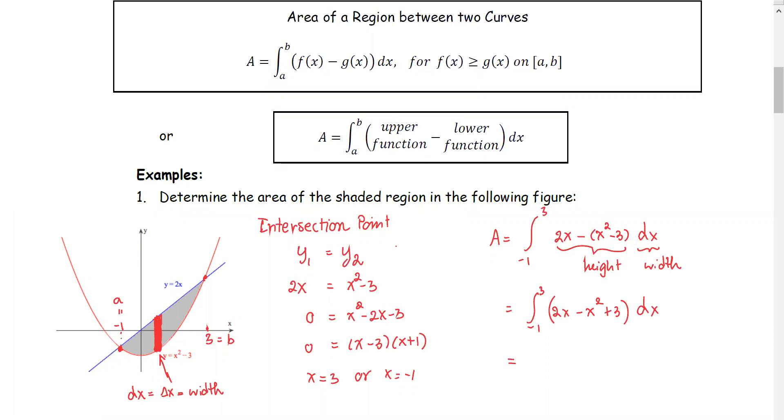Next, use the anti-derivative formula for each term. First term we have x squared, next one we have minus x to the third over 3, plus the last term we have 3x. Evaluate from negative 1 to positive 3.